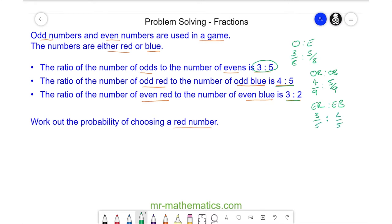Now that I've written these as fractions, I'm going to work out the probability of choosing an odd that is red and an even that is also red. Looking at the odds which are red, we know 3/8 of them are odd, and out of these 3/8, 4/9 of them are red.